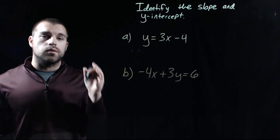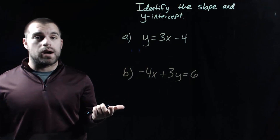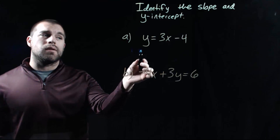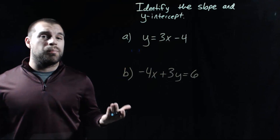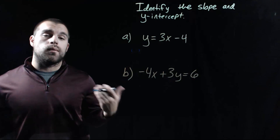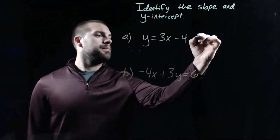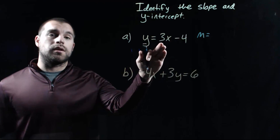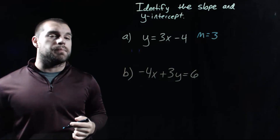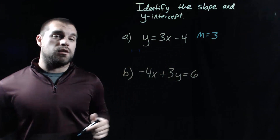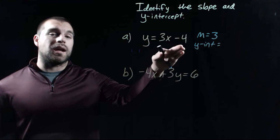In these examples, we're going to look at two equations of lines and identify their slopes and y-intercepts. If we look at example a, it's already written in y equals mx plus b form. The slope is the number in front of the x, so we're looking at 3 as our slope — m equals 3. For the y-intercept, we're looking at the b value on the end, which is negative 4.